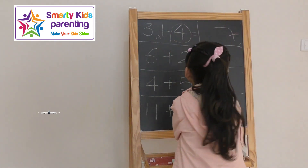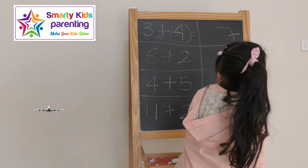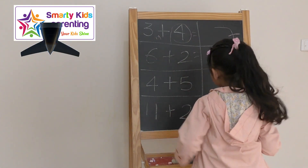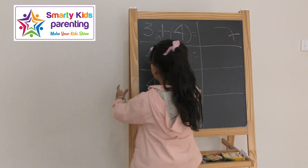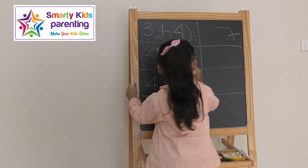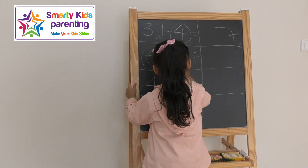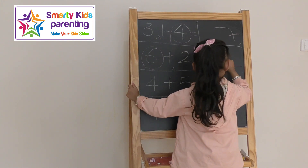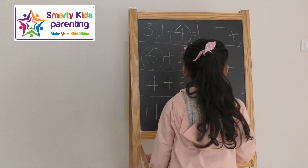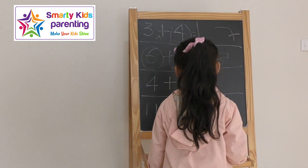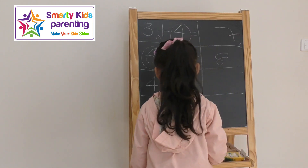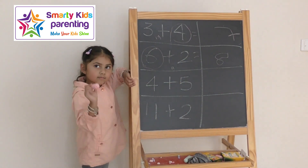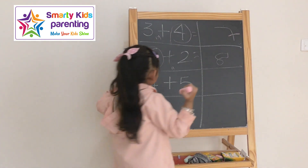Now let's do the next one. Six plus two equals... Seven, eight. Six plus two equals eight. Can you show it to us? Very good. Next one.